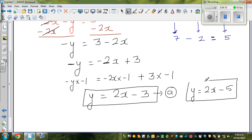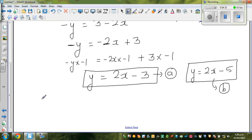So this is equation B. Looking at A and B, equation A is y equals 2x minus 3, and equation B is y equals 2x minus 5. Therefore, I can say 2x minus 3 is equal to 2x minus 5.